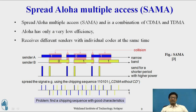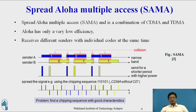In this way, data can be sent using spread Aloha multiple access without collision. A disadvantage of this scheme is that each sender has to find a good chipping sequence. Advantages include that this scheme is very robust against narrow band interference and allows simple coexistence with other systems in the same frequency band.